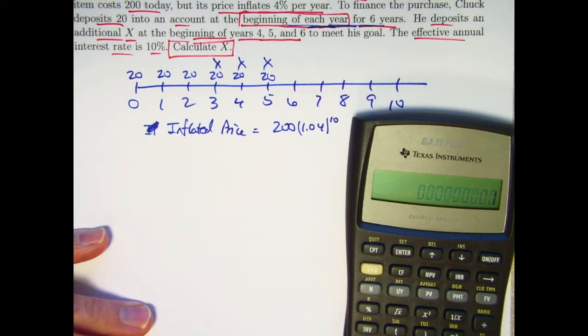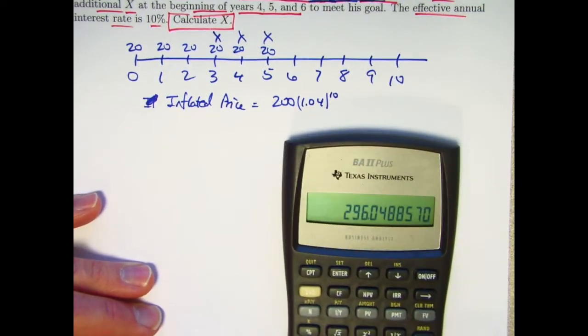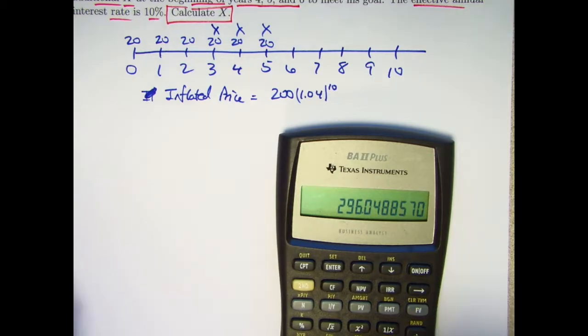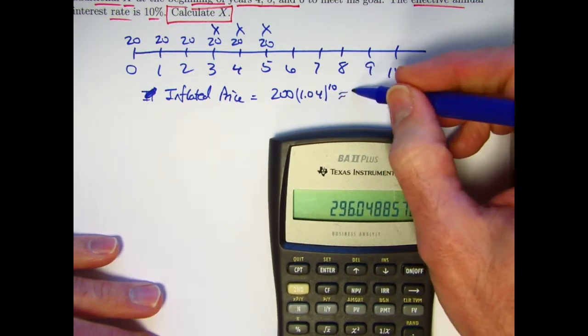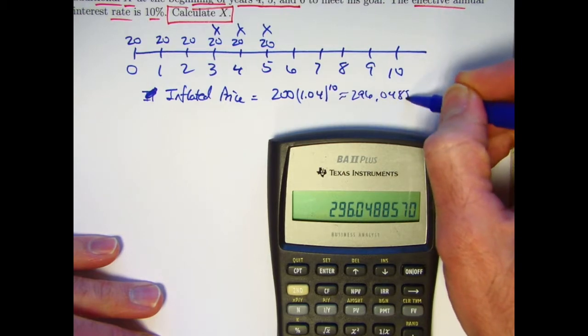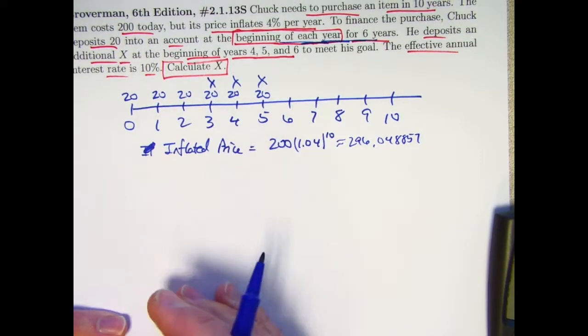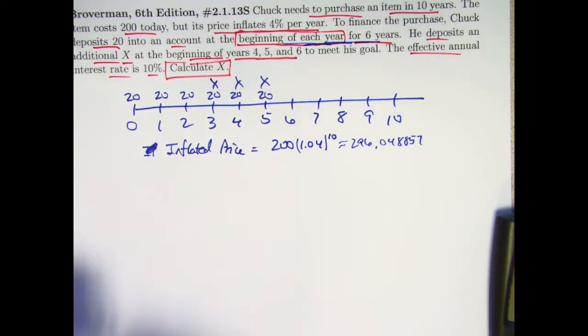And that will be the amount that Chuck needs to save for. 1.04 to the 10th is about 1.48 times 200 = 296.05. Let's carry more decimals: 296.048857. That's what Chuck needs to save for that amount after 10 years.